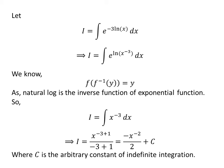So I is equal to minus x to the power minus 2 upon 2 plus capital C. Capital C is the arbitrary constant of indefinite integration. Do not forget to add this constant at the end of any indefinite integration.